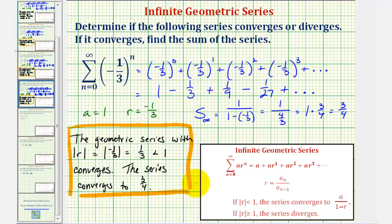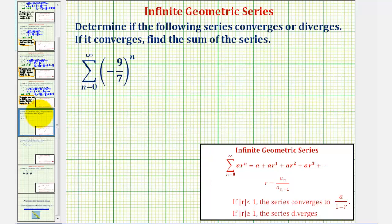Let's take a look at a second example. Here we have the summation of negative nine-sevenths raised to the nth power, from n equals zero to infinity. We recognize that r is equal to negative nine-sevenths, and therefore the absolute value of r is going to be greater than or equal to one, and therefore the series will diverge.